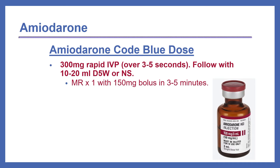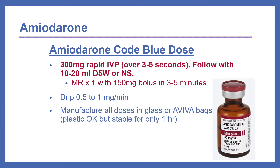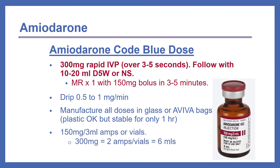We can repeat the dose of amiodarone once with a 150 mg bolus — half the initial dose — in 3 to 5 minutes. Then we can start a drip at 0.5 to 1 mg per minute. All doses should be manufactured in glass or Aviva bags; plastic is okay but stable for only one hour. Amiodarone is available as 150 mg per 3 mL ampules or vials. Remember that 300 mg equals 2 amps or vials, which is 6 mLs.